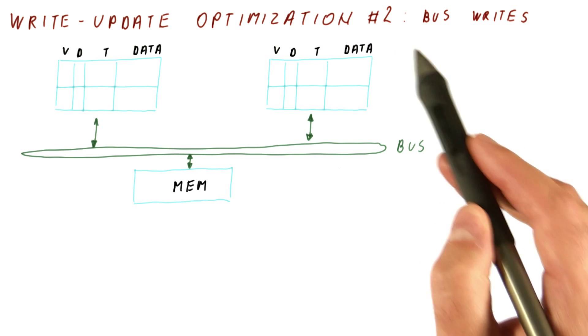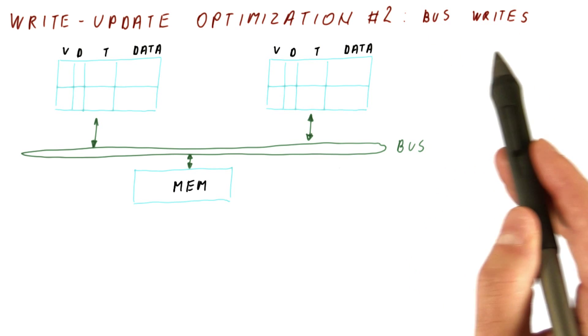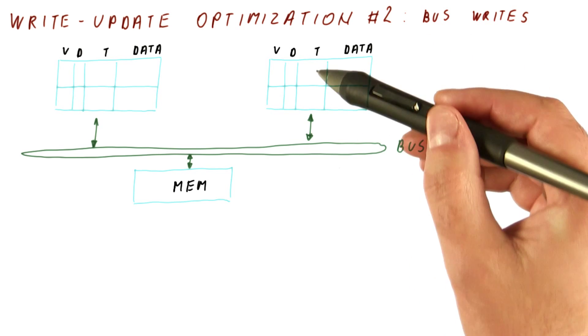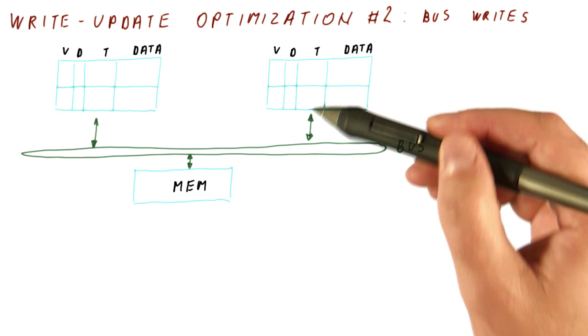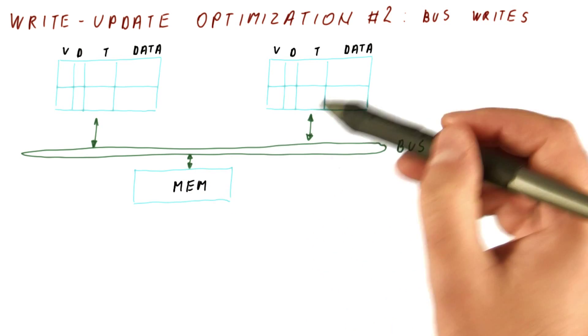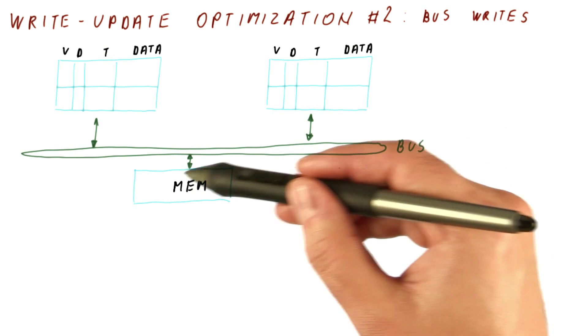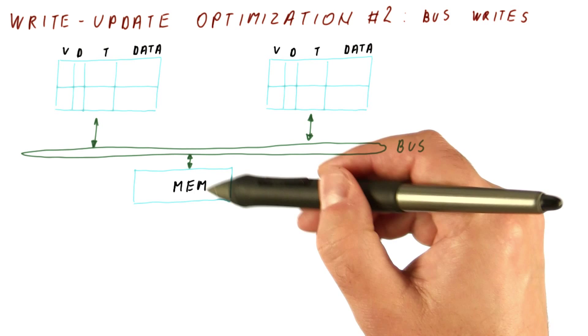Now let's look at the second possible write-update optimization, which is about reducing the number of bus writes. After we added our dirty bit, the memory now gets relatively few writes, only those writes that are coming from replacements. And also the memory no longer needs to respond to all the reads.